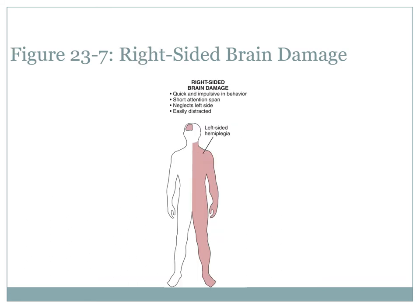If you have a stroke on the right side of your brain, it's the left side of your body that's affected. If you have a stroke on the left side of your brain, it's the right side of your body. So people with right-sided weakness actually have a left-sided stroke — that's important to understand and know.